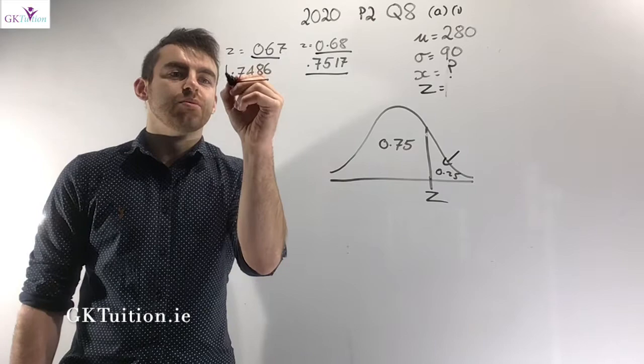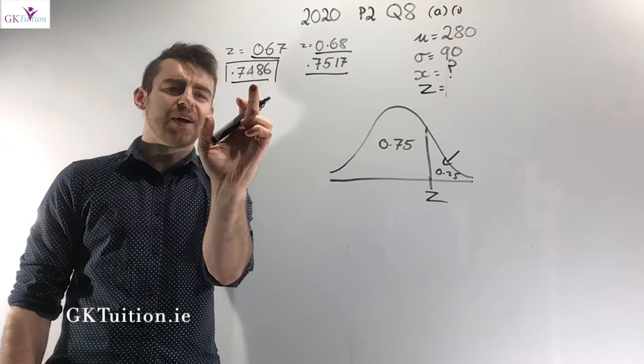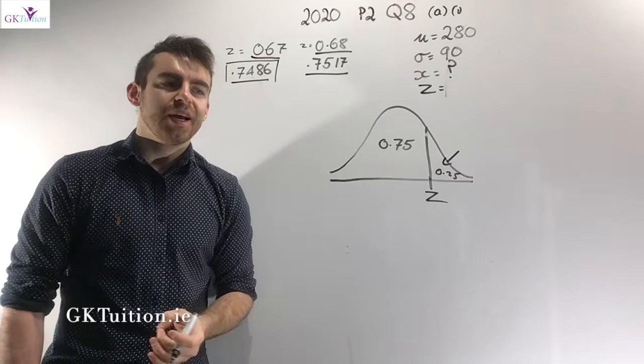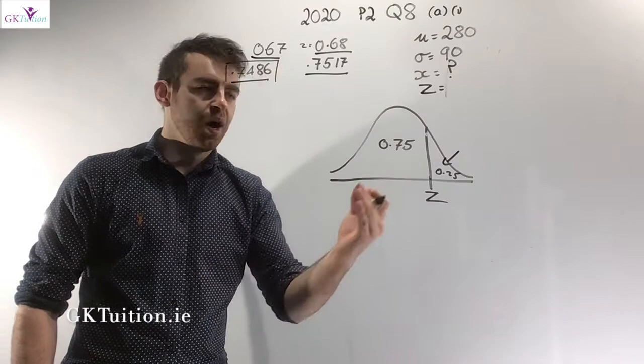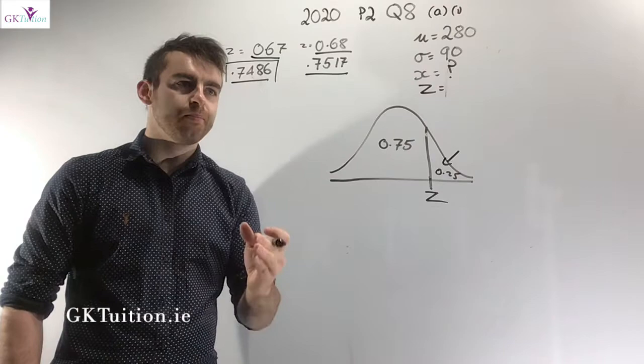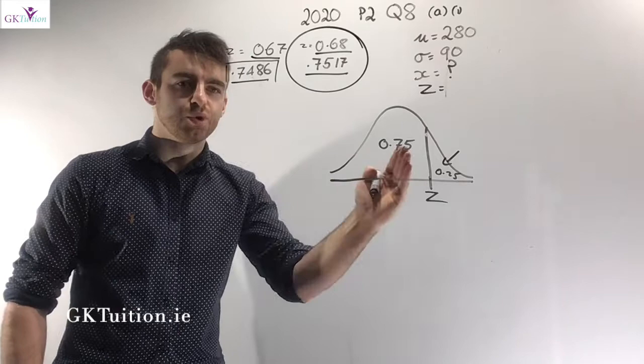Your inclination might be to go for 0.67 since it's closer to 0.75. However, we want to include only the top 25%, and using 0.67 would lower the standards by including slightly more than 25%. So you have to round up to 0.68 to ensure you're only including people in the top 25%.